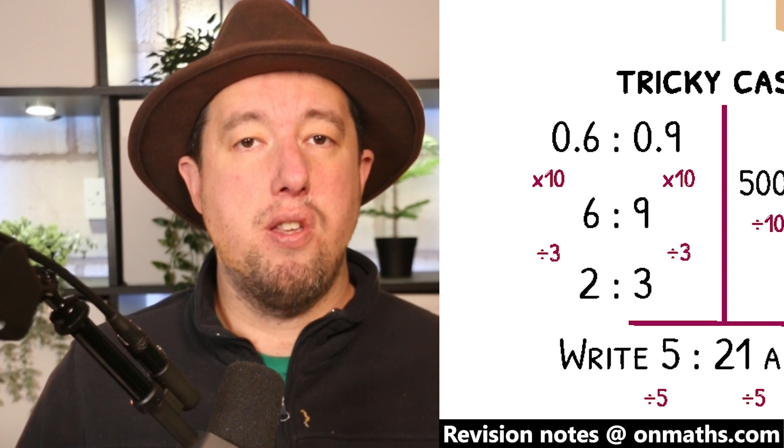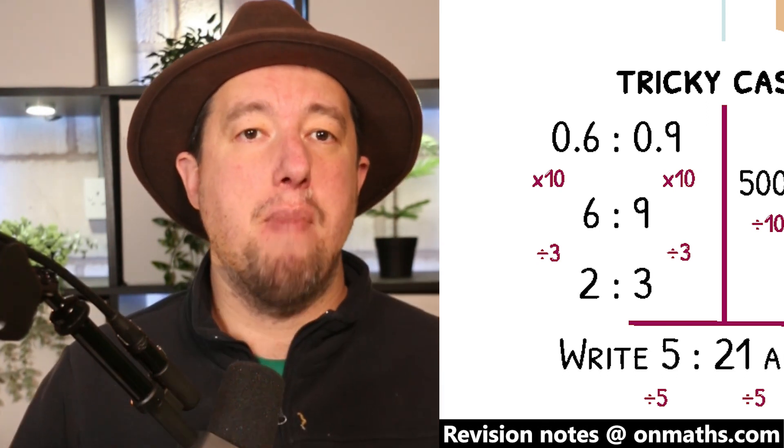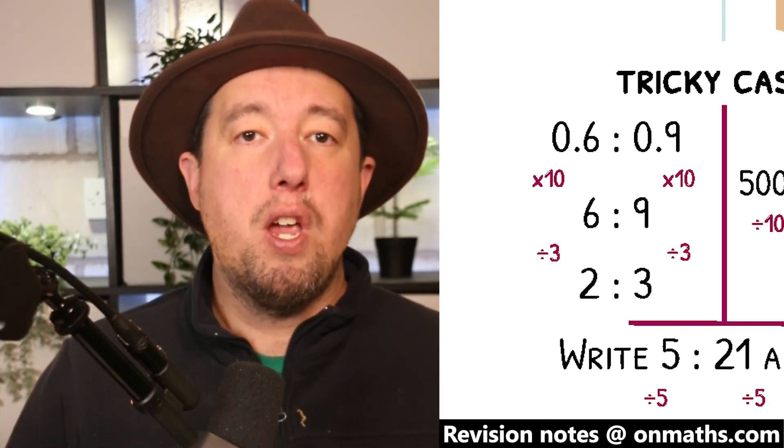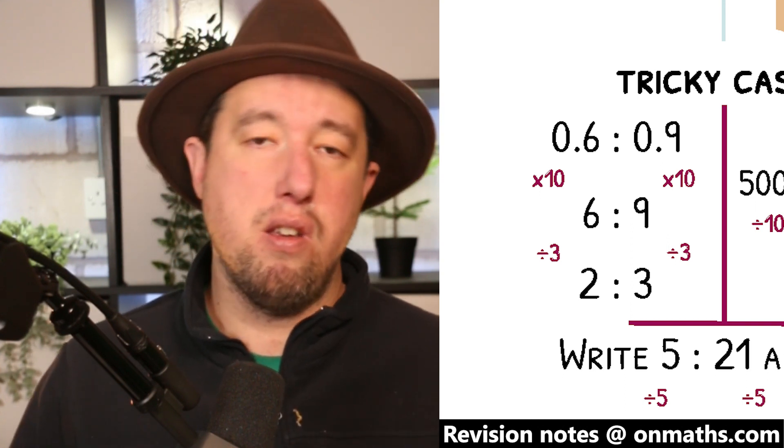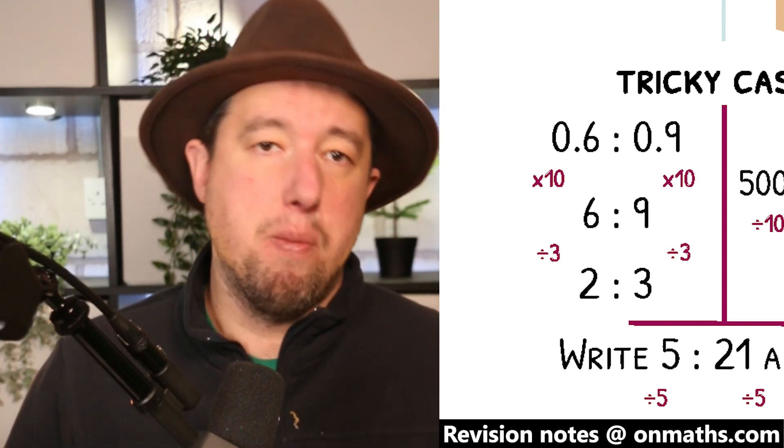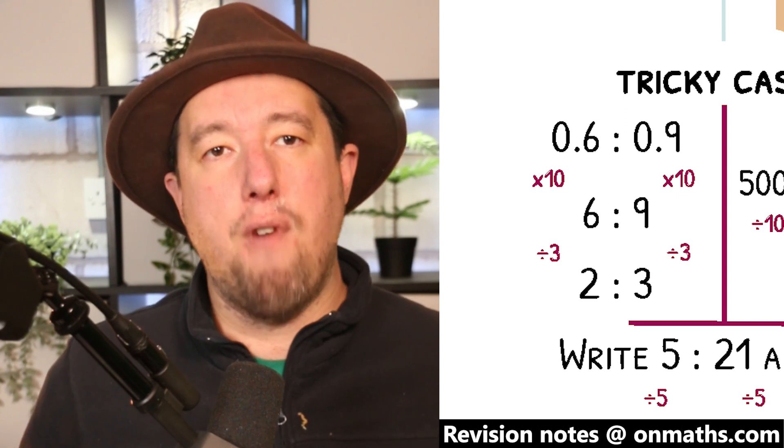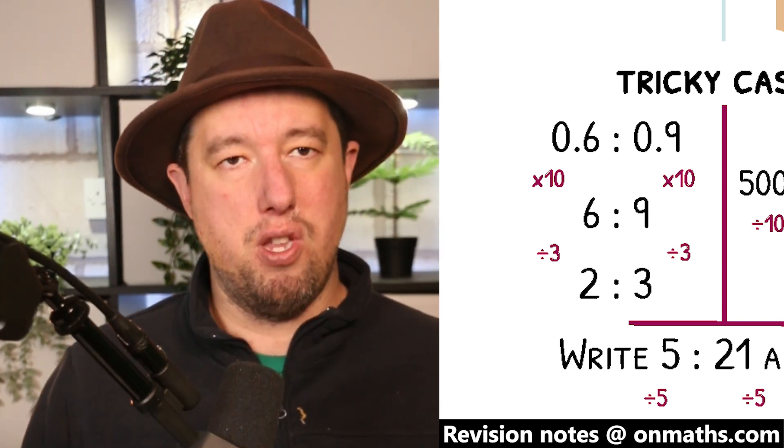If both sides are decimals, multiply them by a power of 10 to make them both whole numbers. We can multiply 0.6 to 0.9 by 10 to make 6 to 9, which we can then divide by 3 to give our answer 2 to 3.